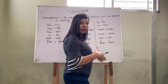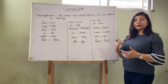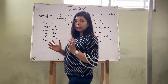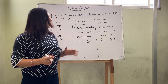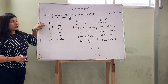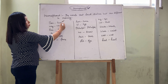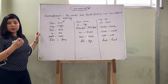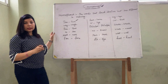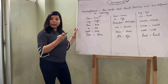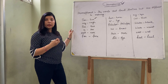When someone is speaking, at that time you cannot make out what that person is trying to say, until and unless you are not listening to the entire sentence. For example, 'sun' — S-O-N means 'beta' (son), and S-U-N means 'suraj' (sun). So there is a difference in the meaning, but there is similarity in the sound.